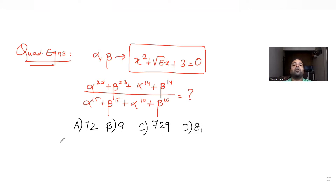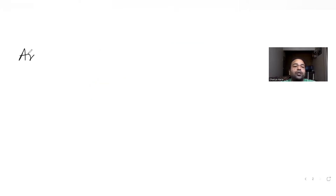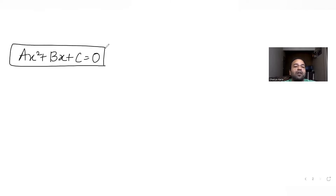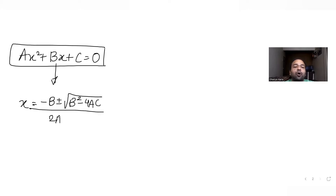We need to figure out which one of the four options is the correct answer. Before understanding the expression, let's first find the two roots of the quadratic. For a quadratic ax² + bx + c = 0, the roots are given by x = (−b ± √(b² − 4ac)) / 2a.